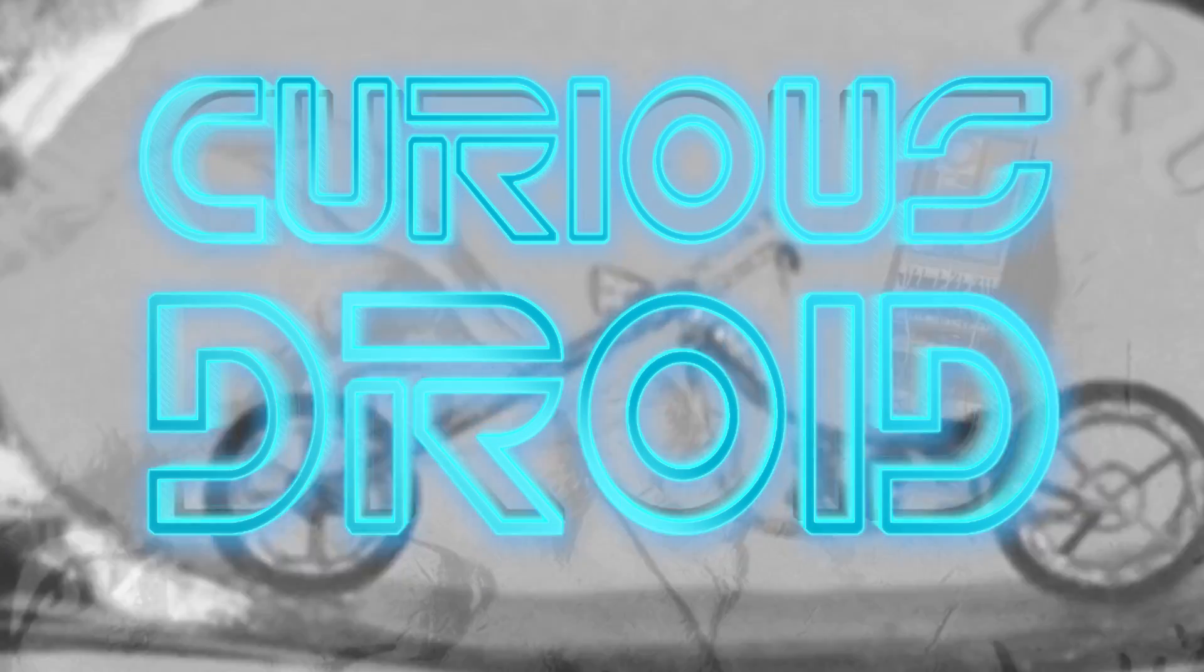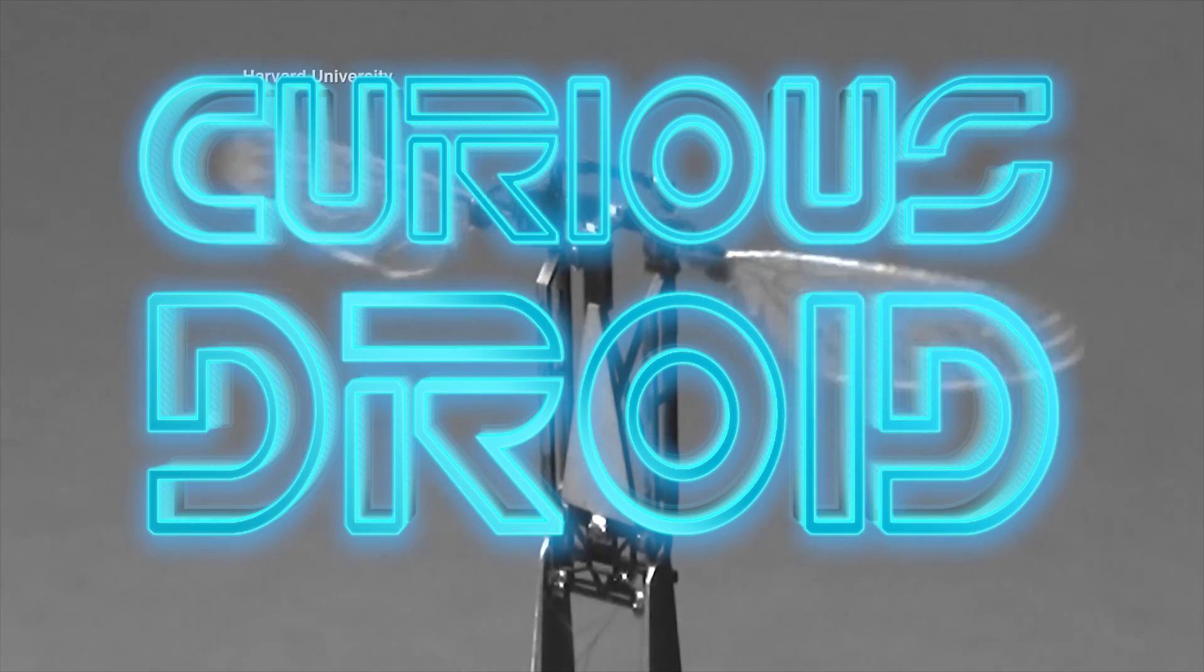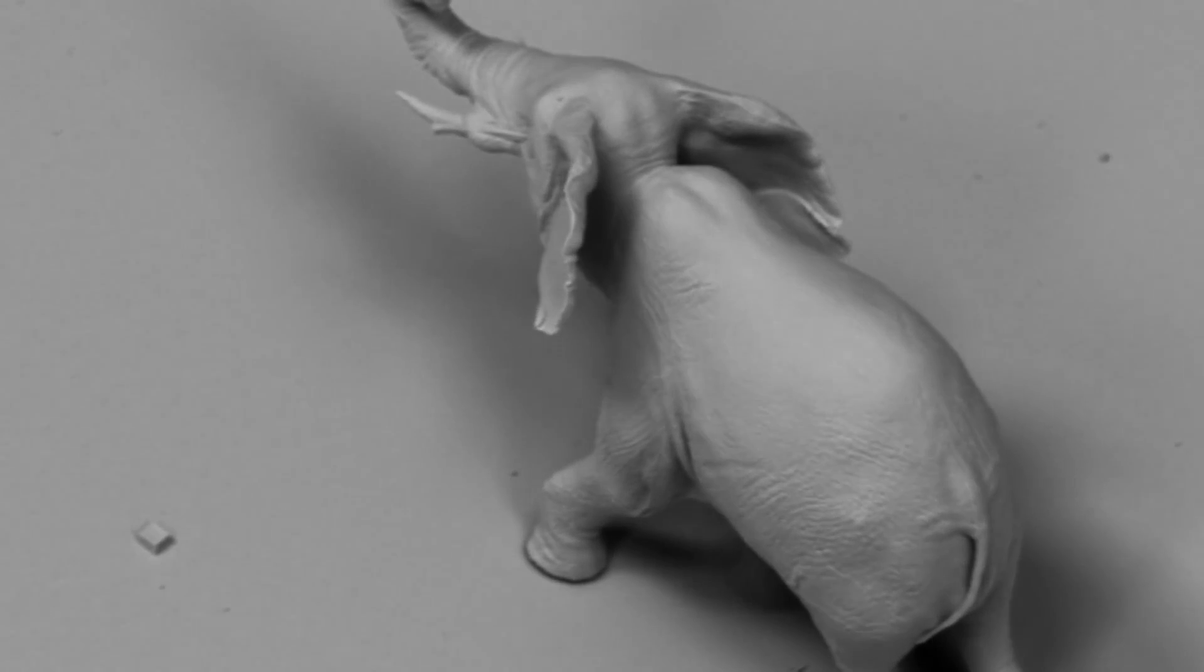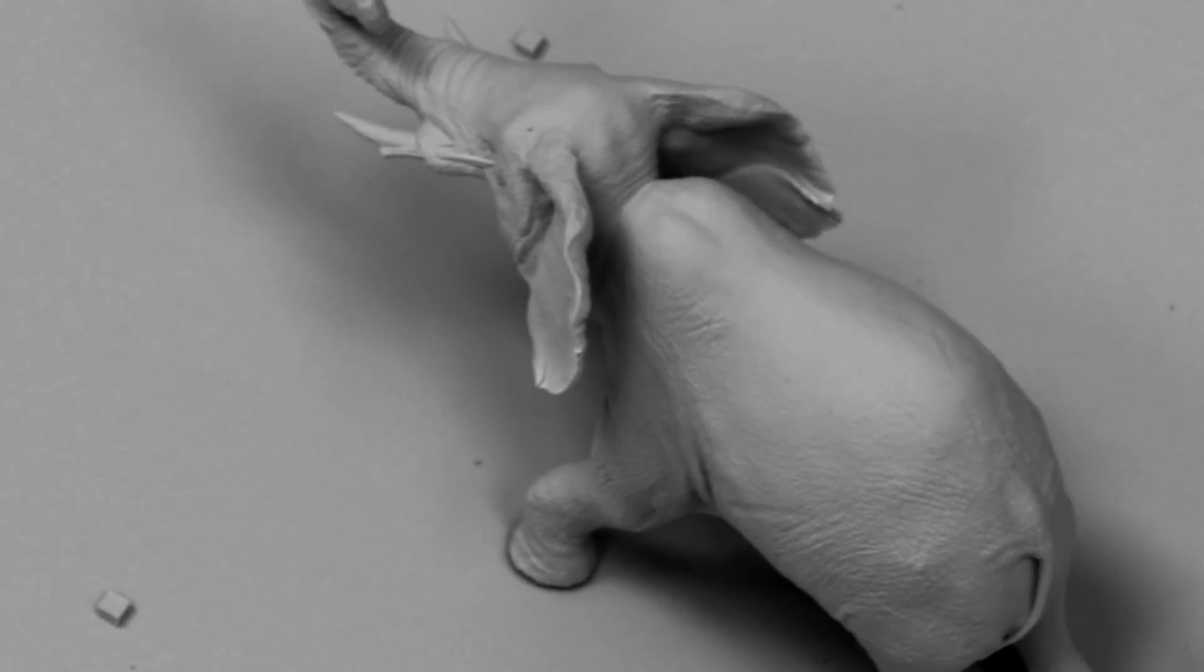Curious Droid presents five smallest man-made objects. The sculptures created by Jonty Hurwitz and his team, like this piece called the Gentle Giant, have now reached such a microscopic scale.